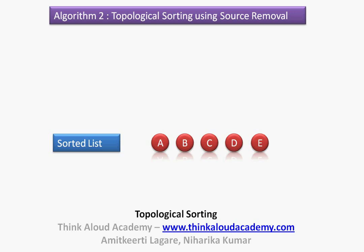We get the same order: A, B, C, D, E. Note that it could also have been B, A, C, D, E — since A and B both have no incoming edges, the order in which they are added can differ. So this is topological sorting using source removal.